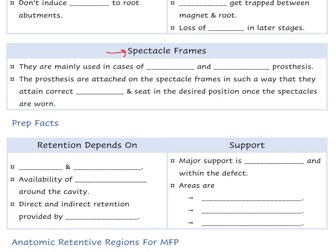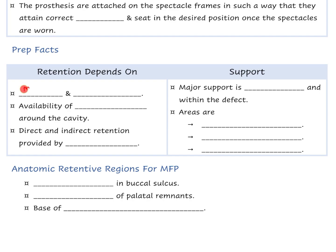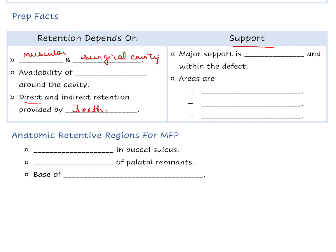Spectacle frames are very useful for orbital and nasal prostheses to camouflage borders and margins and provide proper seating in the same position each time. Retention depends on muscular control of the area and the size of the surgical cavity. It is necessary to evaluate the size and site of the defect and the availability of tissue undercuts. Residual teeth can provide retention for intraoral prostheses, with support from residual maxilla, residual teeth, residual alveolar region, and hard palate. Anatomic retentive regions also include fibrous surgical scars, rolled edges of palatal remnants, and the base of nasal mucosa of the nasal septum.